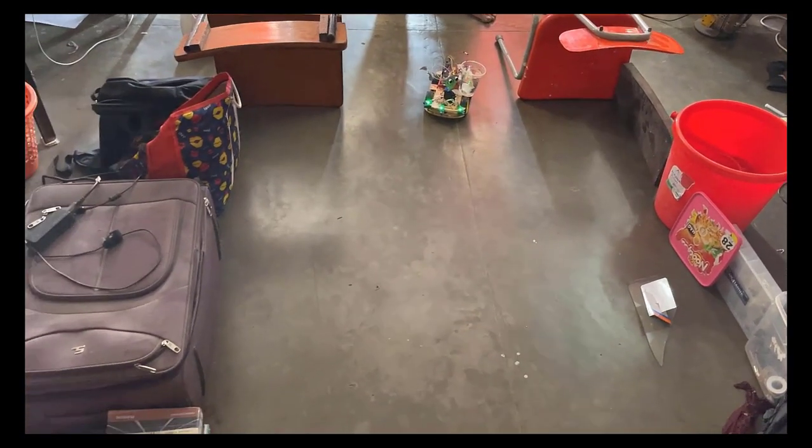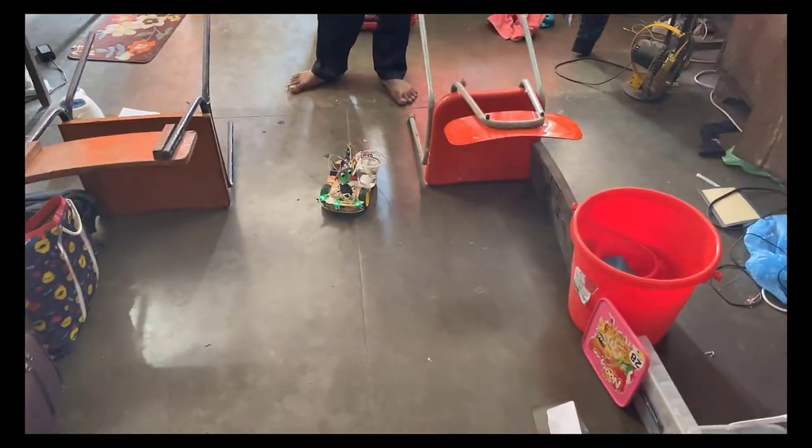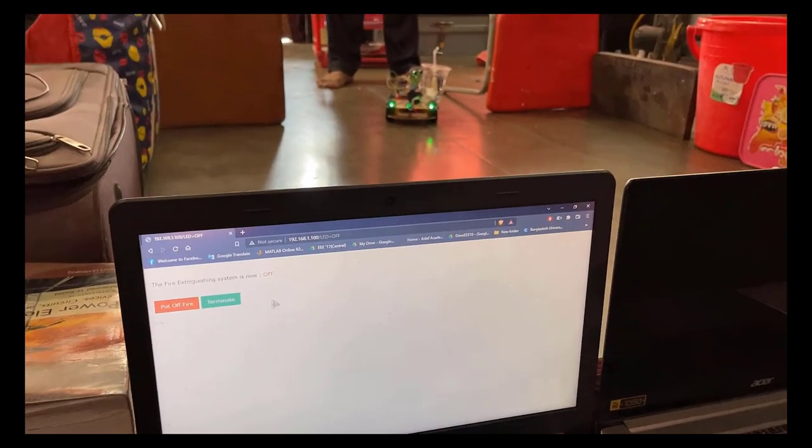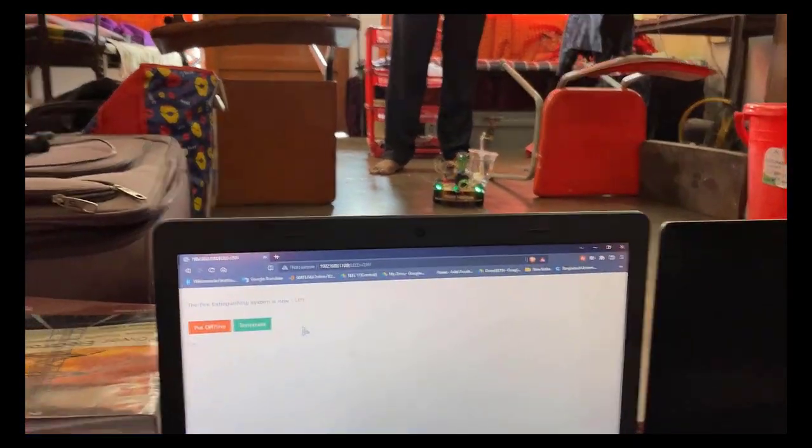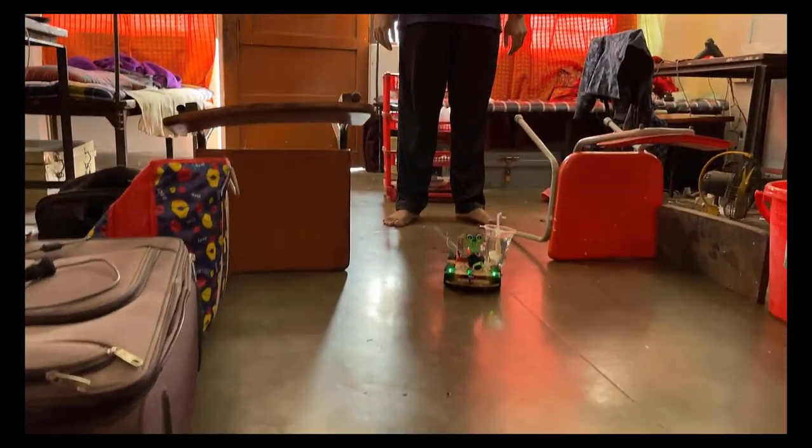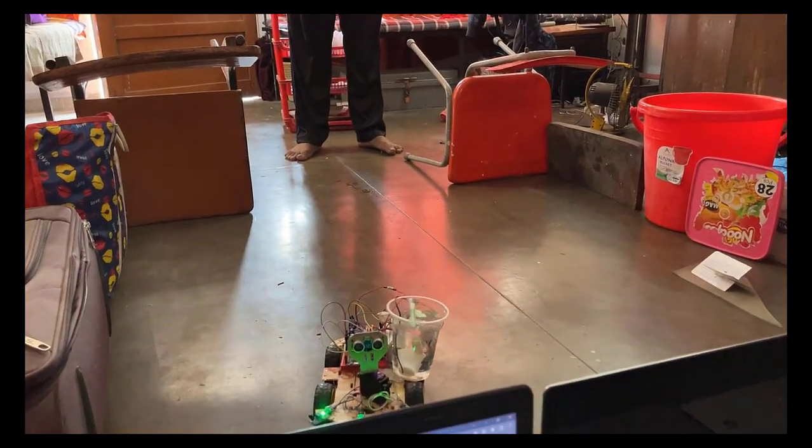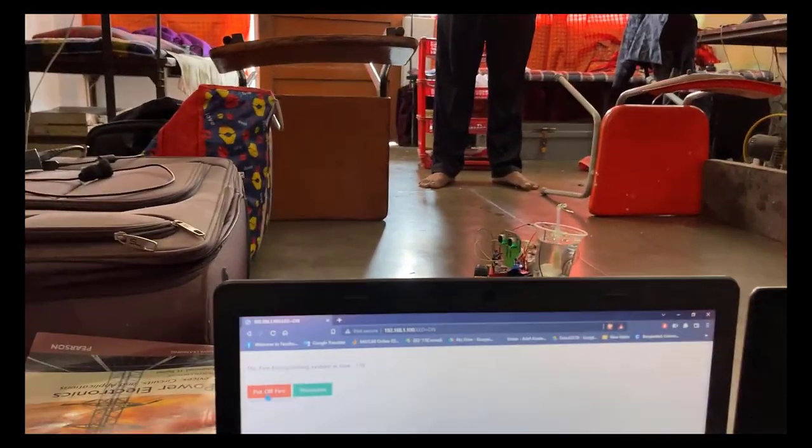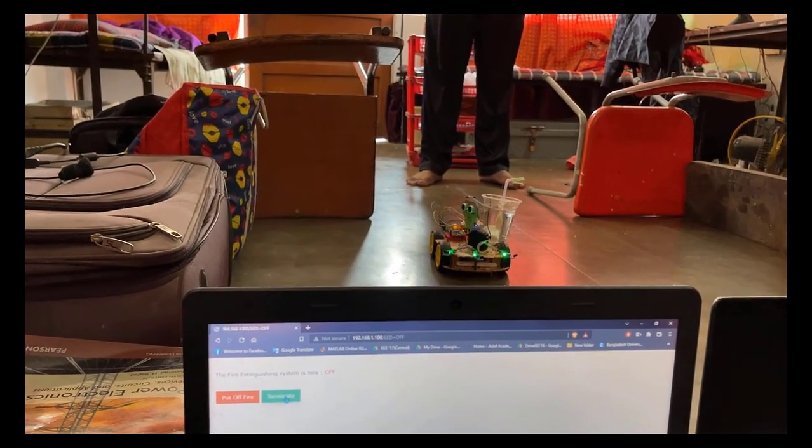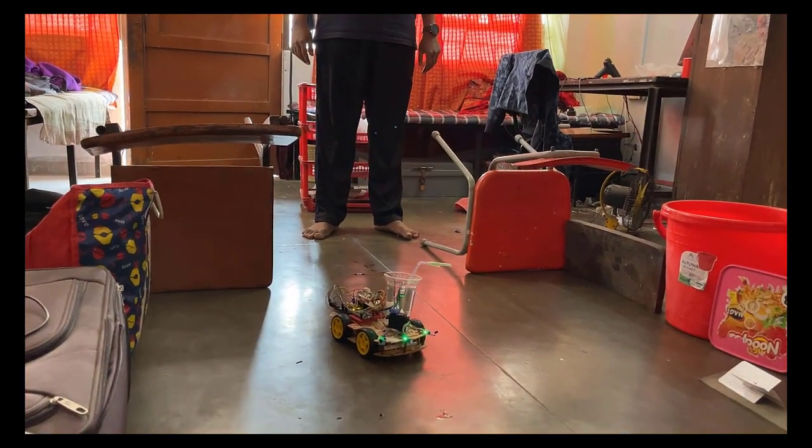This is the experimental setup of our project. When there is a fire inside this area, this base station will actuate the firefighting car. If I click put off fire, you can see that the car is moving. Also, when I press terminate, you can see that the car is not moving.